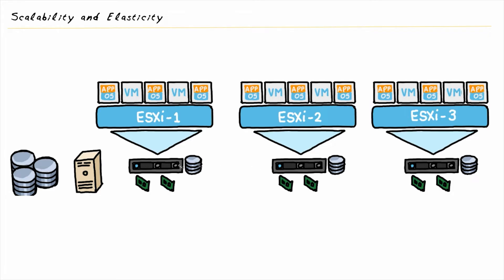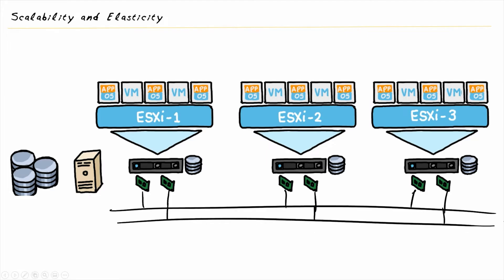In this diagram, I have three physical hosts: ESXi 1, 2, and 3. On them, I've got a variety of virtual machines that are running. Behind the scenes, we have some connectivity into the physical world, maybe a couple of different networks. On those networks, we may have directory services and storage, and for fault tolerance as well.